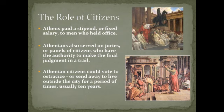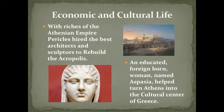Athenian citizens could also vote to ostracize one of their members, which meant they sent them away to live outside the city, usually for a period of about 10 years. With the riches of the Athenian Empire, Pericles hired the best architects and sculptors to help rebuild the Acropolis, which increased Athenians' prosperity and further reminded citizens and visitors that the gods had favored the Athenians. An educated foreign-born woman named Aspasia was also one of Pericles' helpers, and she helped turn Athens into a cultural center for Greece. Pericles and Aspasia surrounded themselves with thinkers and writers, and they organized building programs and public festivals to support the arts in Athens.